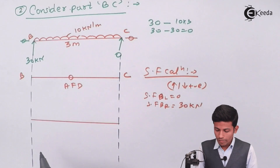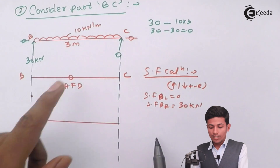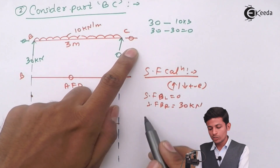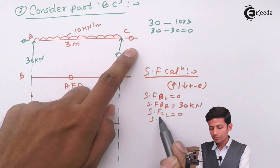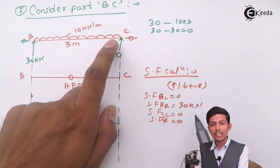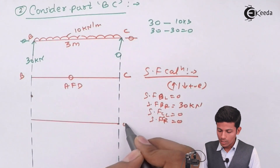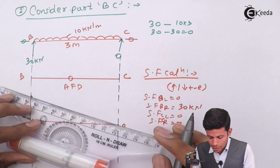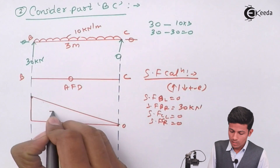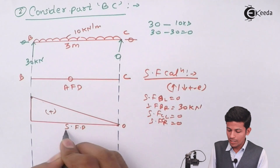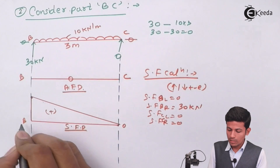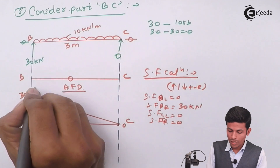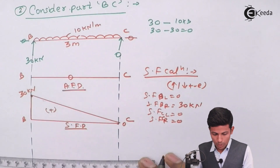Drawing the SFD for member BC: shear force at B (left) = 0, shear force at B (right) = 30 kN (positive, so plotted outside the frame). Shear force at C (left) = 0 and (right) = 0 since there is no load beyond C. The SFD for BC shows 30 kN positive over the span.